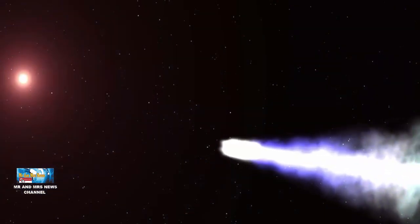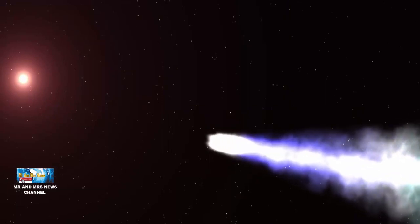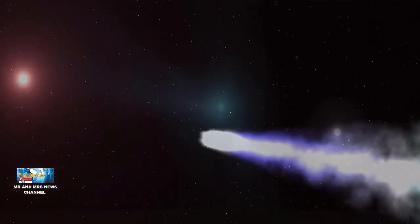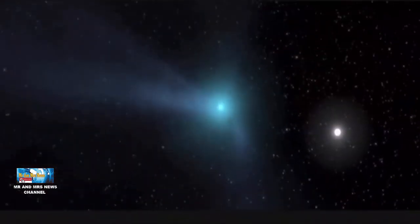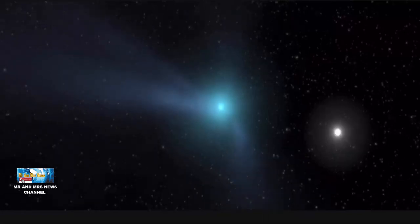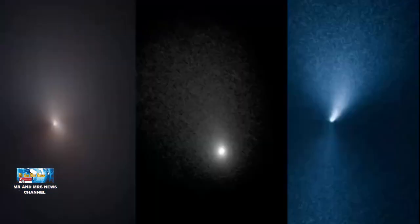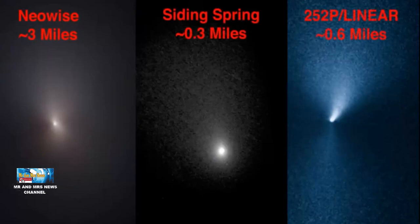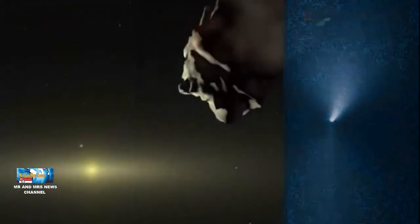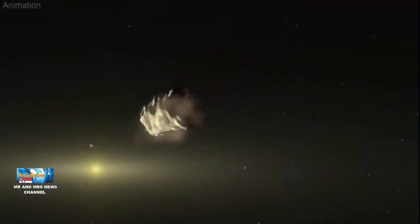Para astronomi melaporkan bahwa komet terbesar yang pernah ditemukan berusia 4 miliar tahun saat ini telah meluncur ke arah bumi dengan kecepatan 35.000 km per jam. Meski begitu, komet yang dinamai C2014-UN271 atau Bernardinelli-Bernstein tidak akan menghantam bumi karena berhenti pada jarak sekitar 1 miliar mil ketika melakukan pendekatan terdekatnya pada tahun 2031.